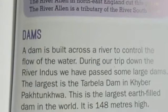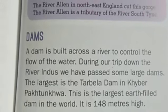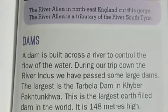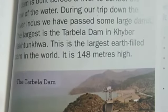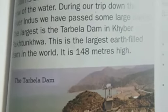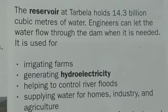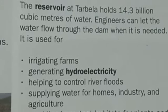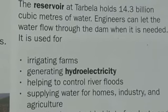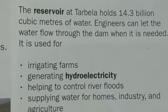A dam is built across a river to control the flow of water. During a trip down the Indus river, we pass some large dams. The largest is the Tarbela Dam in Khyber Pakhtunkhwa — this is the largest earth-filled dam in the world, 148 meters high. The reservoir at Tarbela holds 14.3 billion cubic meters of water. Engineers can let the water flow through the dam when needed. It is used for irrigating farms, generating hydroelectricity, helping to control river floods, supplying water for homes, industry and agriculture, and providing important habitats for plants and animals.